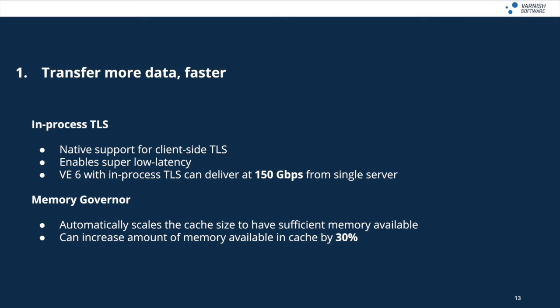One feature is in-process TLS, which adds native support for client-side TLS and TLS termination. This reduces the number of network hops because there's no separate TLS termination process, enabling us to hit 150 gigabits per second from a single off-the-shelf server — easily the highest performing content delivery capability out there, and particularly useful for future-proofing services. Another feature is Memory Governor, which automatically scales the cache size, optimising the cache and increasing memory availability by a third, enabling you to cope with many more requests directly from the cache.